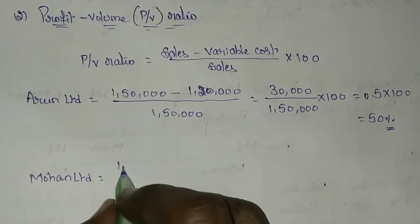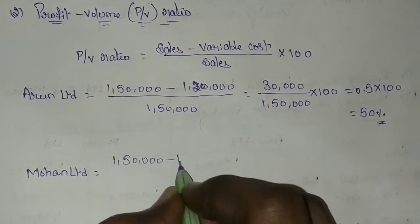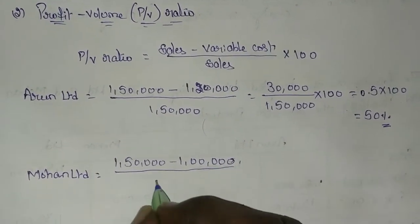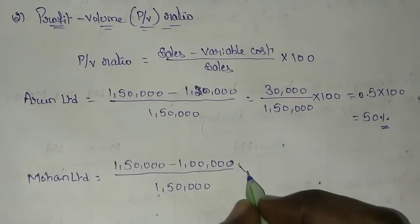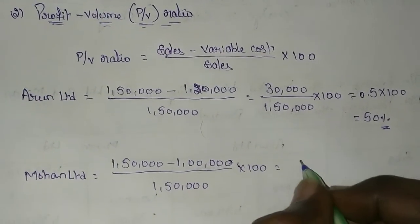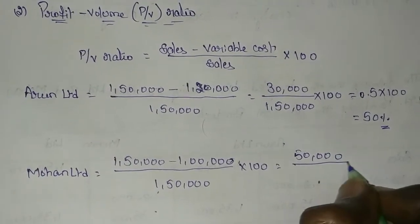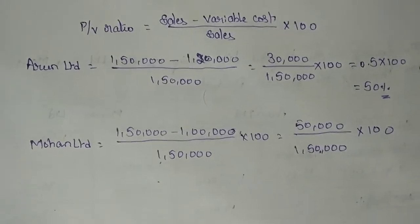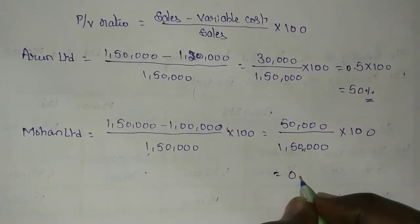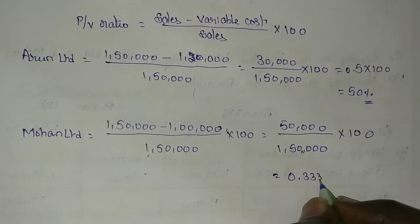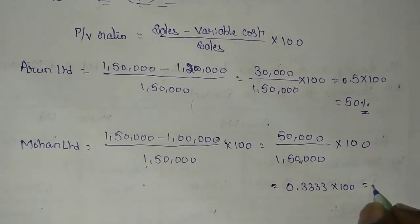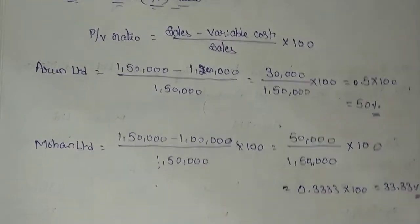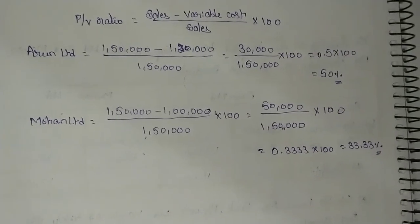For Mohan Limited: sales 1,50,000 minus variable cost 1,00,000, divided by 1,50,000 into 100. The answer is 0.3333 into 100, so the PV ratio for Mohan Limited is 33.33%.